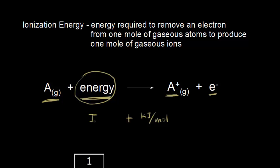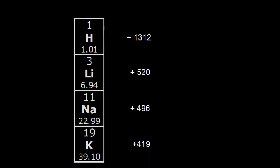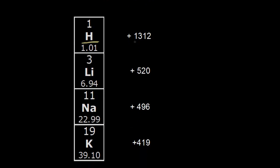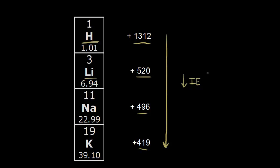In this video, we're only going to talk about the first ionization energy, IE1. Let's look at actual ionization energies for elements in group one. For hydrogen, it takes 1,312 kilojoules per mole to pull an electron away. For lithium, it's about 520 kilojoules per mole. Going down — sodium is 496, potassium is 419. There's a clear trend: as we go down a group in the periodic table, there is a definite decrease in ionization energy, so it must be easier to pull an electron away.